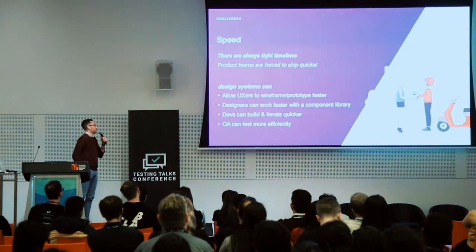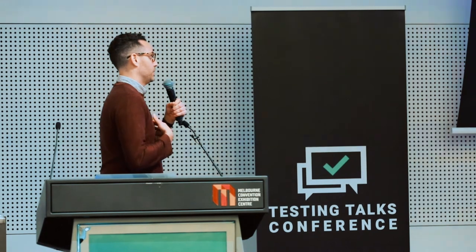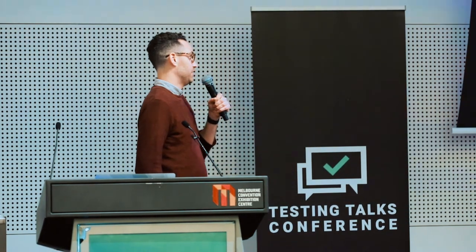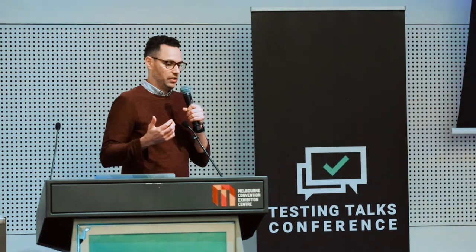Speed is a big one. We're always facing tight timelines and always trying to ship quicker. Design systems help designers especially — they have libraries within their sketch files and can just drag and drop components. Designs come together a lot faster than ever before. Devs can work faster too because they've got the code snippets within the design system — either HTML or React or whatever the product needs. And QA can test more efficiently because it's that one source of truth.